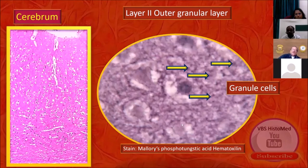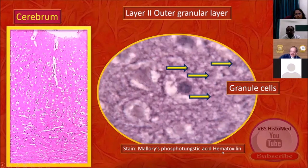This is not an H&E. The image here is H&E, but the inset uses a different stain — Mallory Phosphotungstic Acid Hematoxylin stain. Again, you don't need to know the stain name, but you have the privilege of seeing these granular cells with special stains.